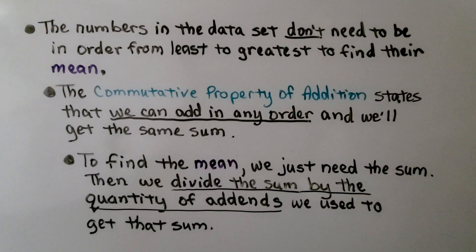The numbers in the data set don't need to be in order from least to greatest to find their mean. The commutative property of addition states that we can add in any order and we'll get the same sum. To find the mean, we just need the sum. Then we divide the sum by the quantity of addends we used to get that sum.